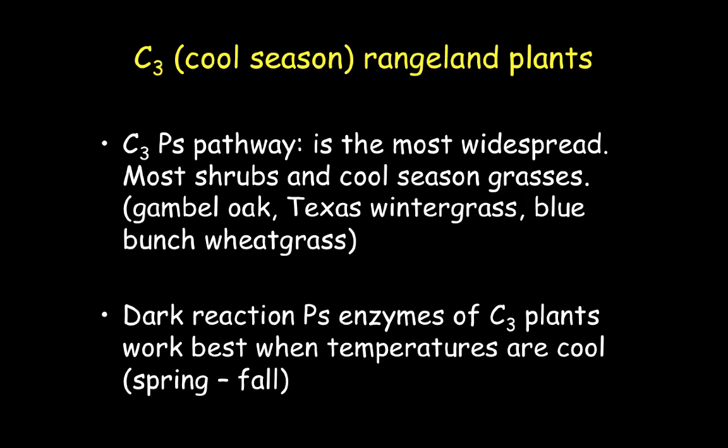Our cool season rangeland plants are what we call a C3 photosynthetic pathway, and this pathway is widespread throughout the world. You'll see this type of pathway not only in grasses but in shrubs as well. Examples include Gambel oaks, some winter grass species in Texas, blue bunch wheatgrass, and some annuals such as annual rye and wild oats, as well as some forbs. With these cool season C3 plants, the enzymes in the dark reactions have evolved to work best when temperatures are very cool, during spring and fall.